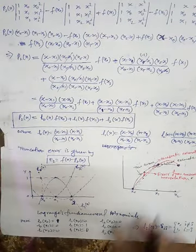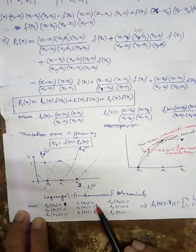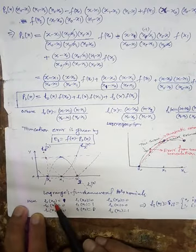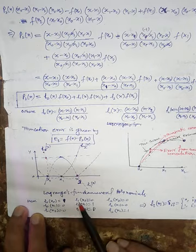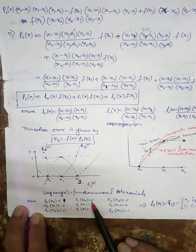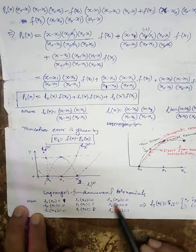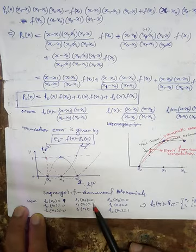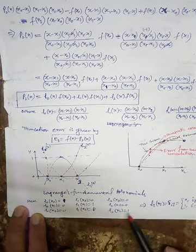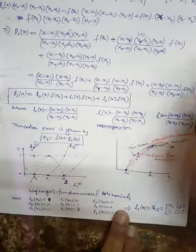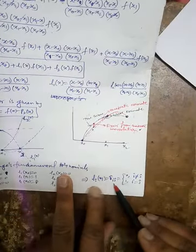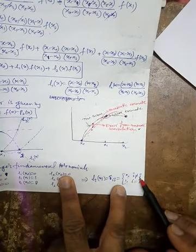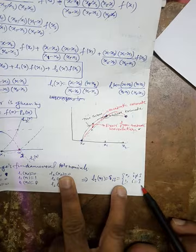The behavior is: L0(x0)=1, L1(x0)=0, L2(x0)=0; L0(x1)=0, L1(x1)=1, L2(x1)=0; L0(x2)=0, L1(x2)=0, L2(x2)=1. When both indices are the same, the value is 1; when different, it is 0. So they again behave like a Kronecker delta function: Li(xj) = delta_ij, equal to 1 when i=j and 0 when i≠j.